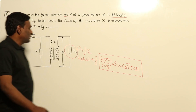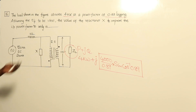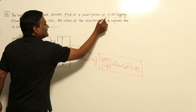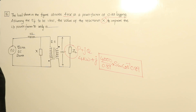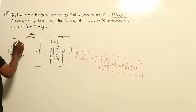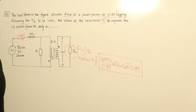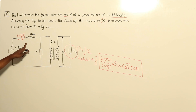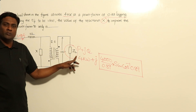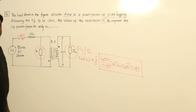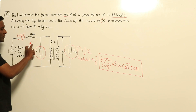This reactive power is 4 kilowatt. So if I don't have this source, the source only has to supply that much reactive power. But see here — the value of reactance X to improve the input power factor to unity means the source should not deliver reactive power. But it needs reactive power — who has to supply that? This capacitor only has to supply.